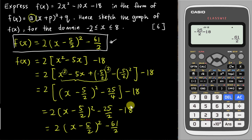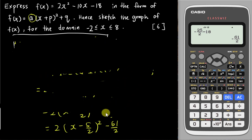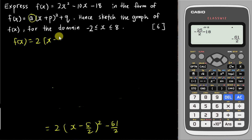For part two, you need to sketch the graph. Pay attention to the domain — it's from negative 2 to 8 — so use those values to find the range. You'll need the completed square equation: f(x) = 2(x - 5/2)² - 61/2, to find the graph's key features.